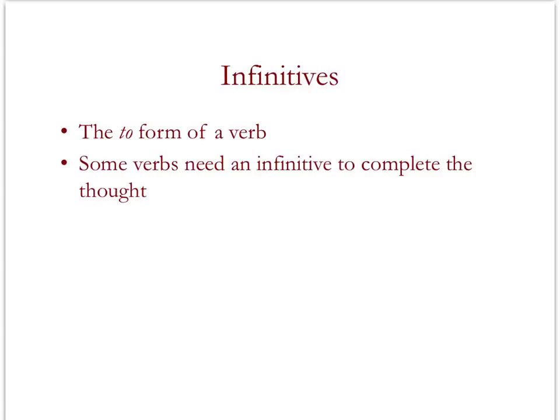The next sentence element is infinitives. This is the 'to' form of the verb. You can know that the infinitive is the 'to' form of the verb because it contains infinite possibilities of what the verb can become. From the infinitive, you can get the I form, the you form, the he, she, or it form — all of the forms that you need to say different things with different subjects. Some verbs need an infinitive to complete the thought, like 'to be able.' If you say 'she is able,' you don't know what she is able to do. So, for example, you could say 'she is able to jump,' and then you would know what she was able to do. Ought and should are other verbs that often take complementary infinitives.